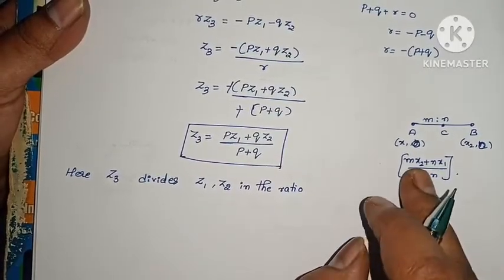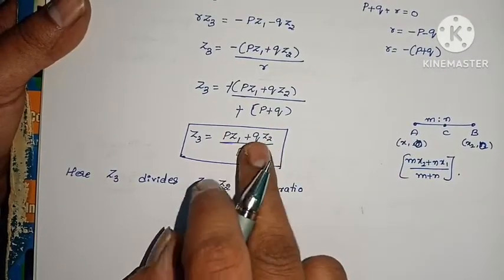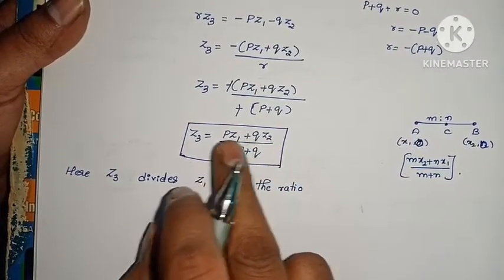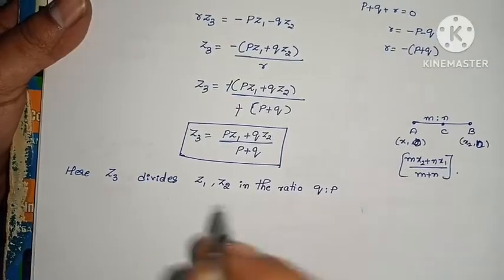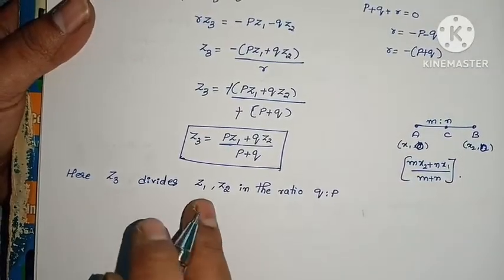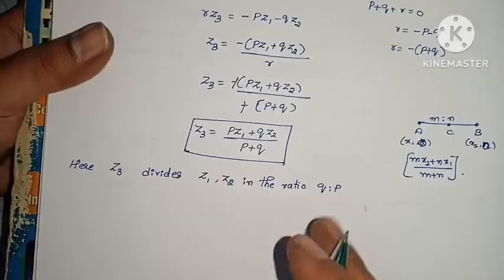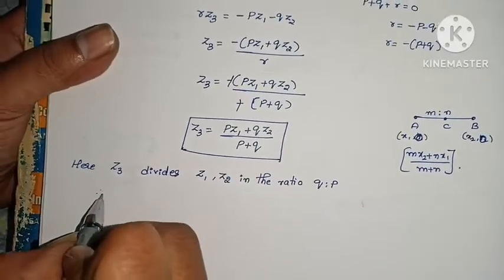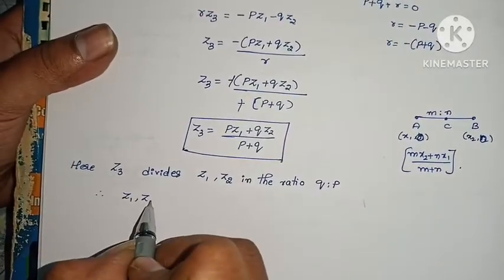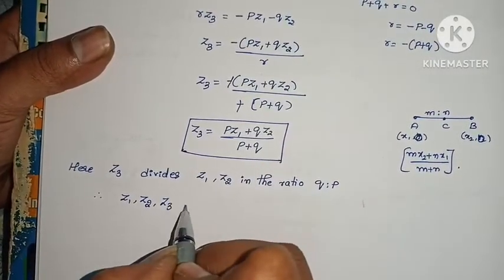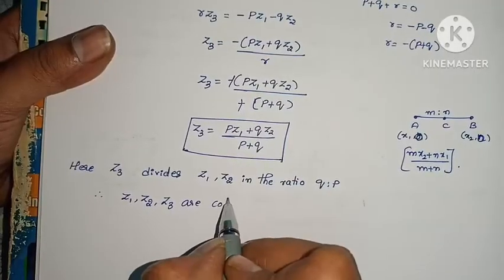Here, M corresponds to Q and N corresponds to P. So Z3 divides the line segment Z1Z2 in the ratio Q to P. Therefore, Z1, Z2, Z3 are collinear.